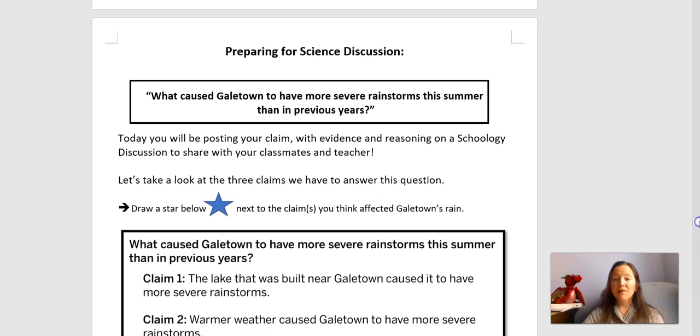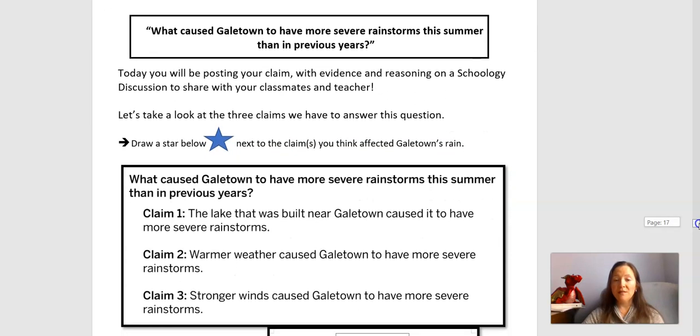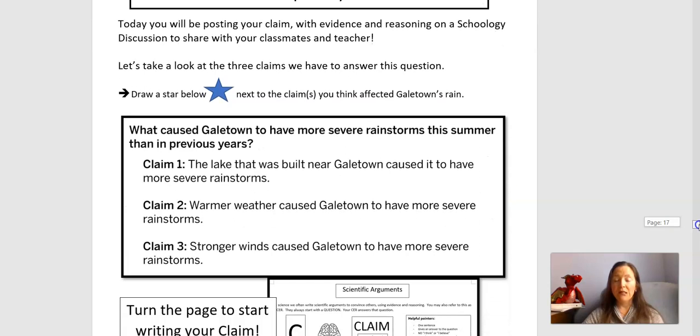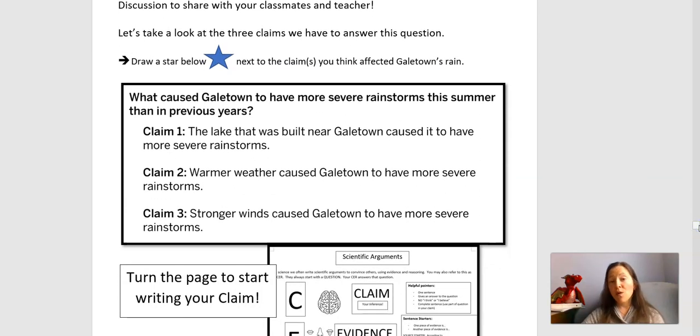And then the big part of this particular lesson is preparing and writing a scientific discussion. So it is quite possible that you believe that all of these claims have affected Galetown and its rain, or maybe you really feel more strongly about one or two of them. So you're going to think about what you think we have good evidence for and then you're going to start writing.